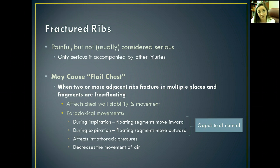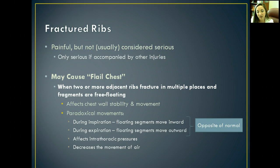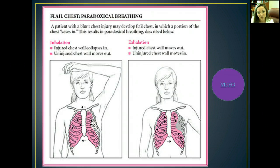It's the opposite of normal, and that signals that the patient has flail chest — meaning multiple fractures of ribs with fragments floating. It's going to affect the intrathoracic pressures, and it also affects the patient's ability to move air in and out.